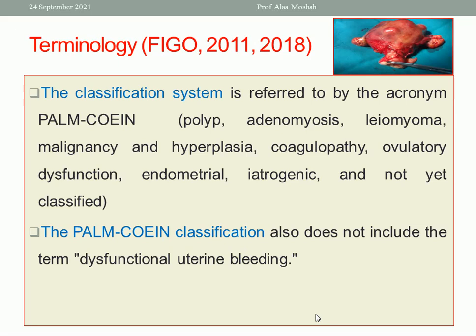What is the PALM-COEIN classification system? PALM stands for: P for polyp, A for adenomyosis, L for leiomyoma, M for malignancy and endometrial hyperplasia. COEIN stands for: C for coagulopathy, O for ovulatory dysfunction, E for endometrial factor, I for iatrogenic causes, and N for not yet classified.